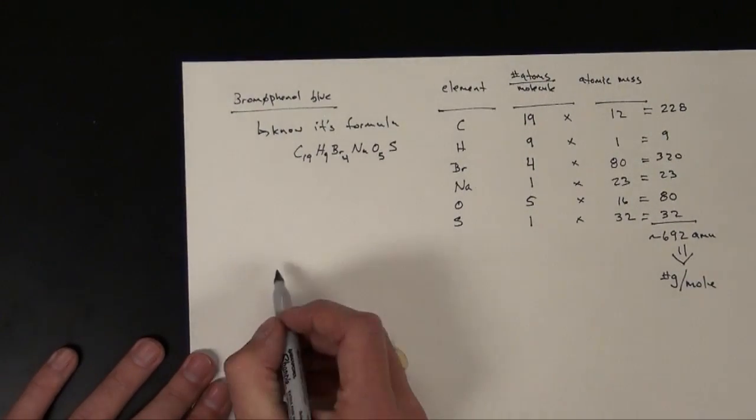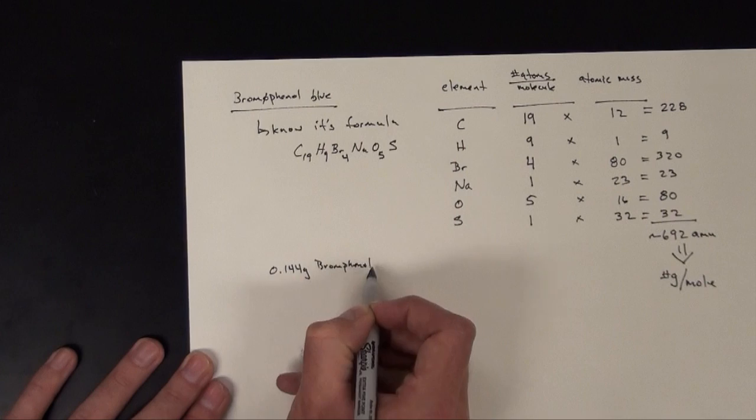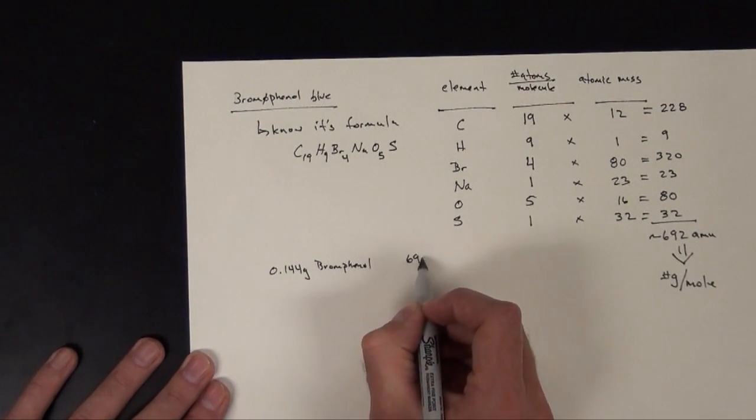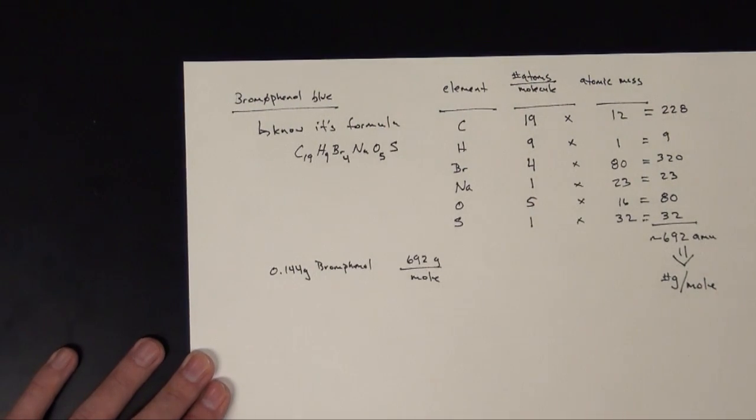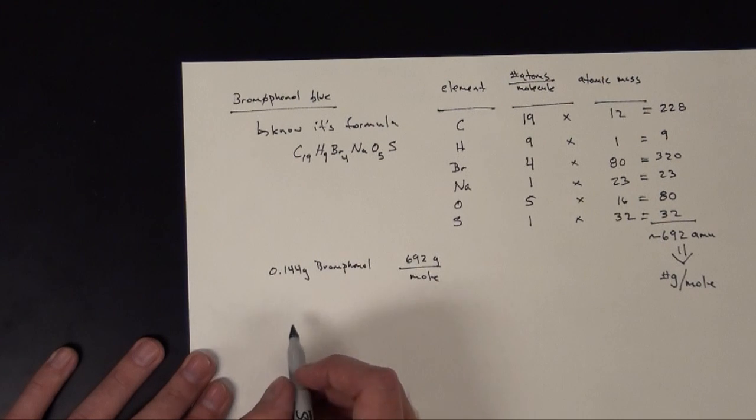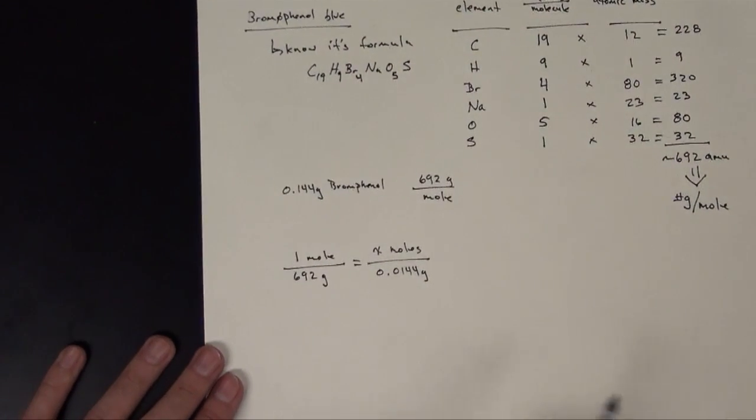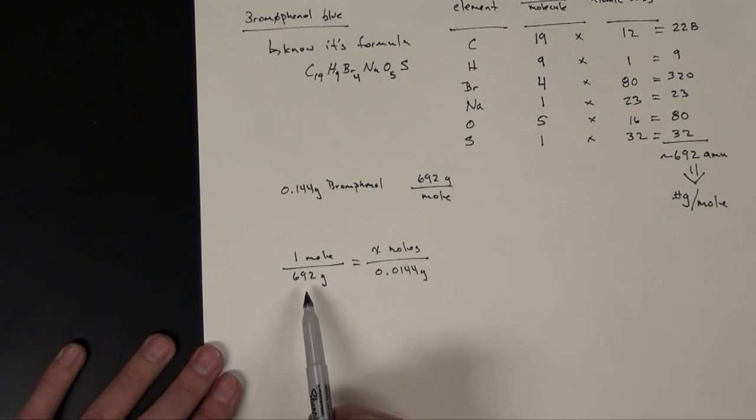So let's go back to here. I have 0.144 grams of the bromophenol blue. And I know that 692 grams per mole. So I want to be able to now do a calculation that I can figure out how many moles. So I can set up a proportion. So if I know one mole is equivalent to 692 grams, the question is, how many moles is my 0.014 grams? The first thing you should do is pay attention to kind of reality. This number is many times smaller than this, so I'm not going to get a big number as an answer. This is really small, so I don't have anywhere close to one mole of my bromophenol blue. So I am expecting a small number.